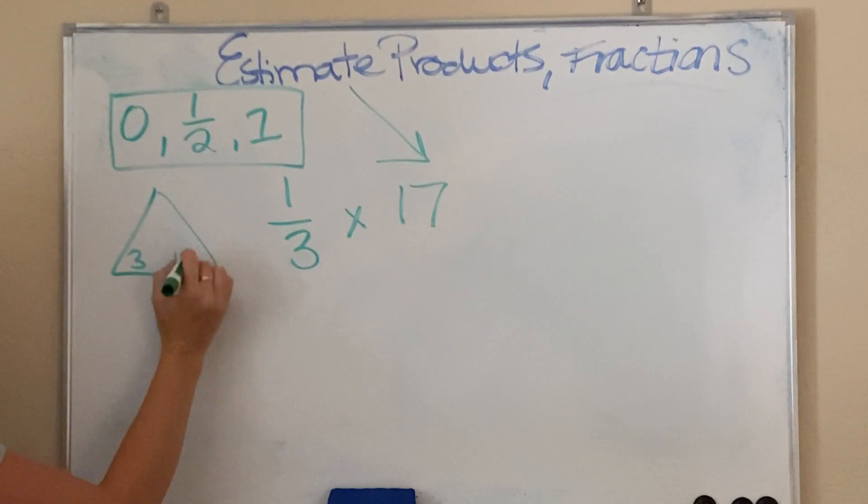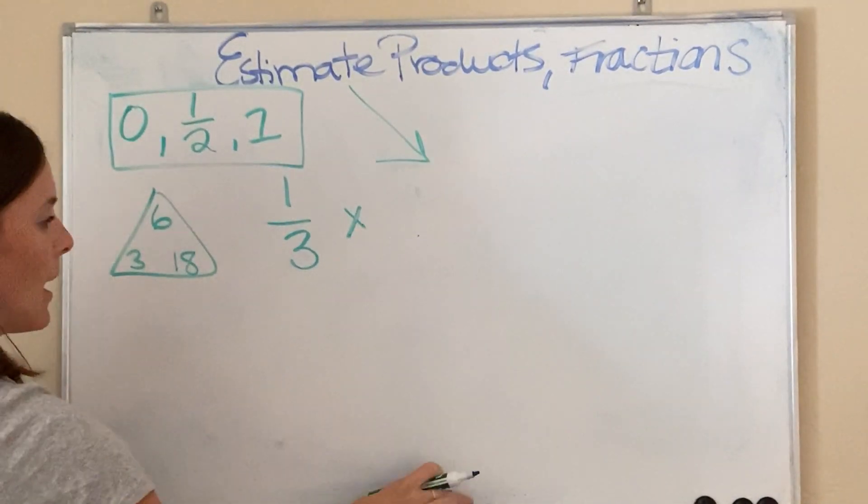3 and 2 other numbers. I want a number close to 17 that's a fact family with 3. What if I did 18? 3 times what is 18? 6. So, I'm going to go ahead and round this 17 up to an 18.